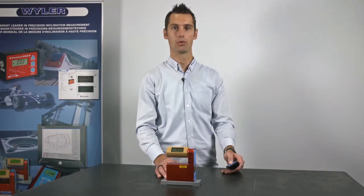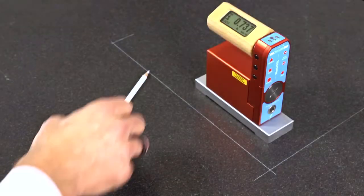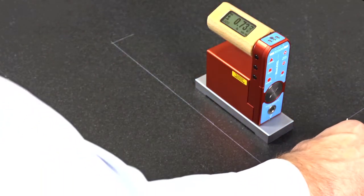Now I'm performing a reversal measurement. For the precise positioning of the measuring instrument, I've marked an auxiliary line.